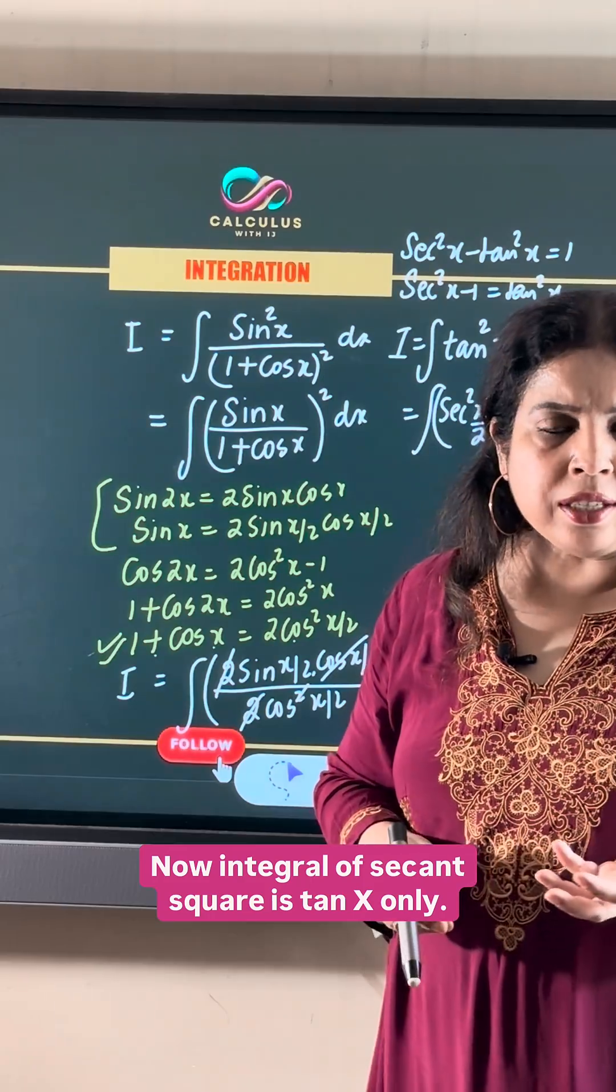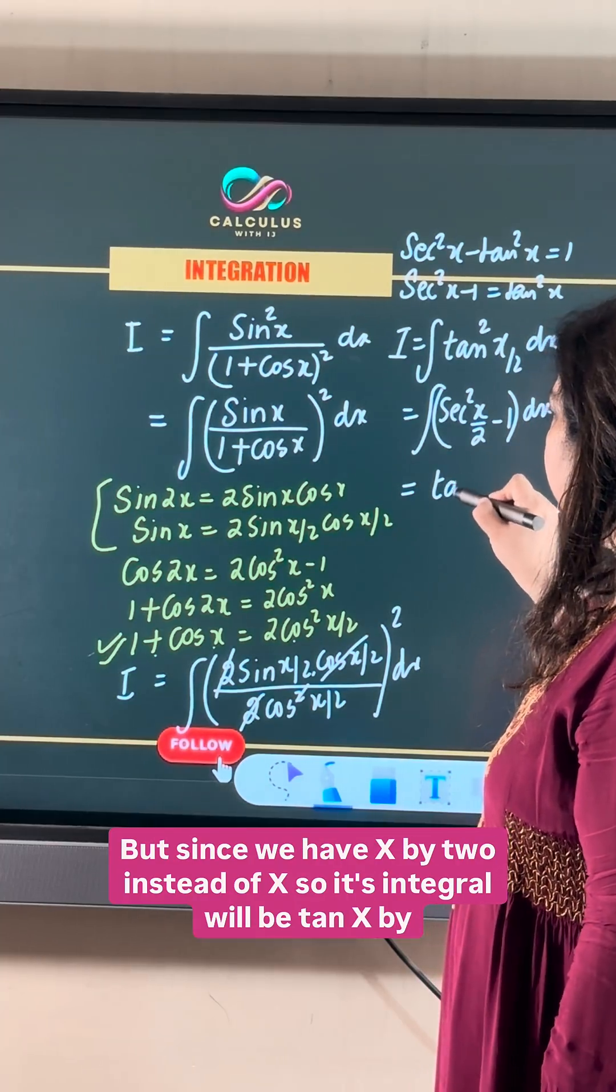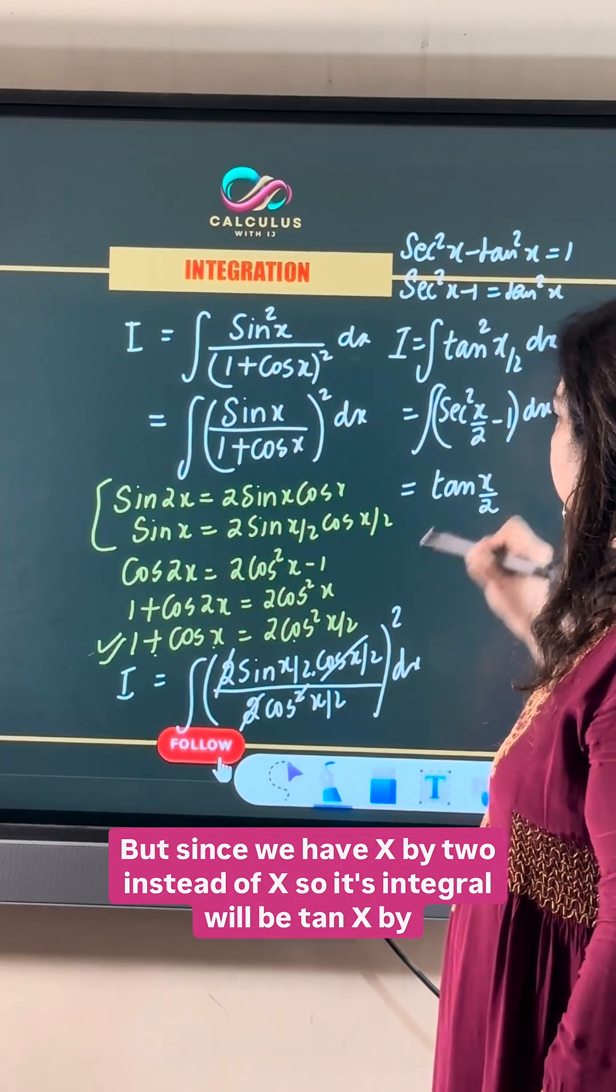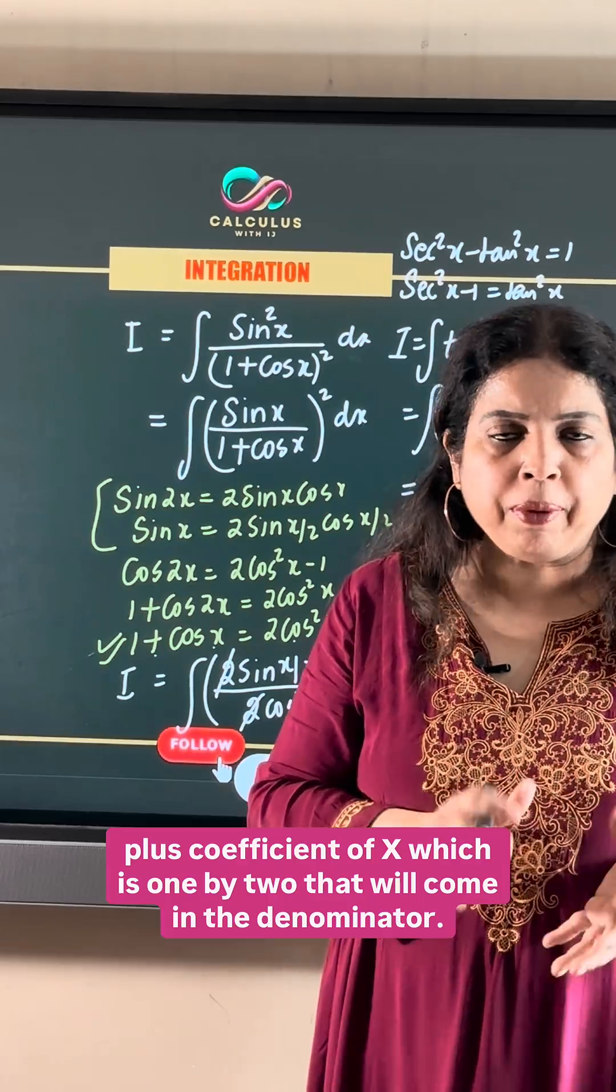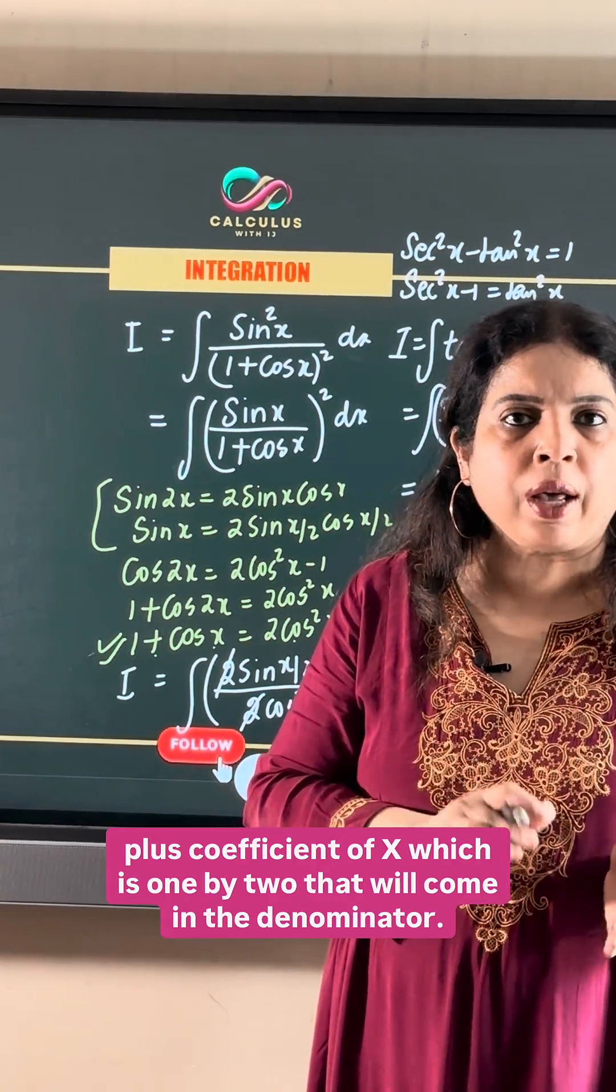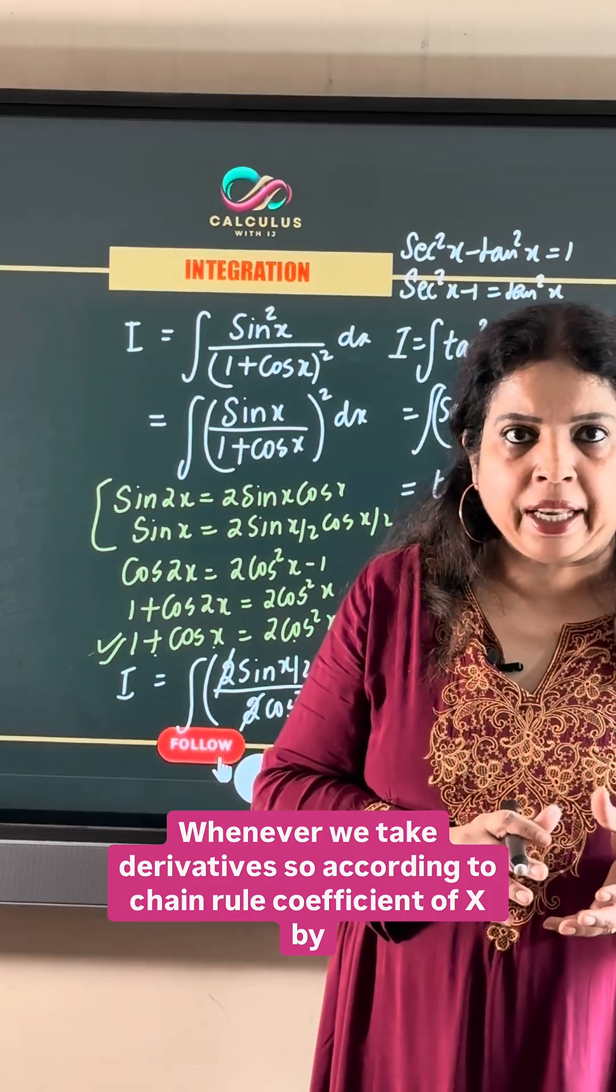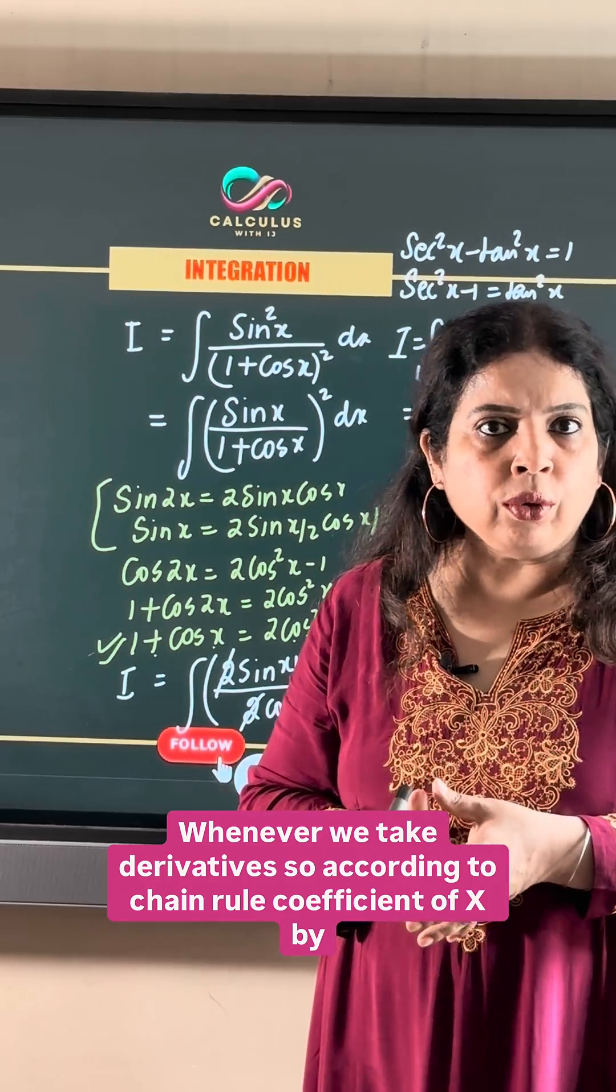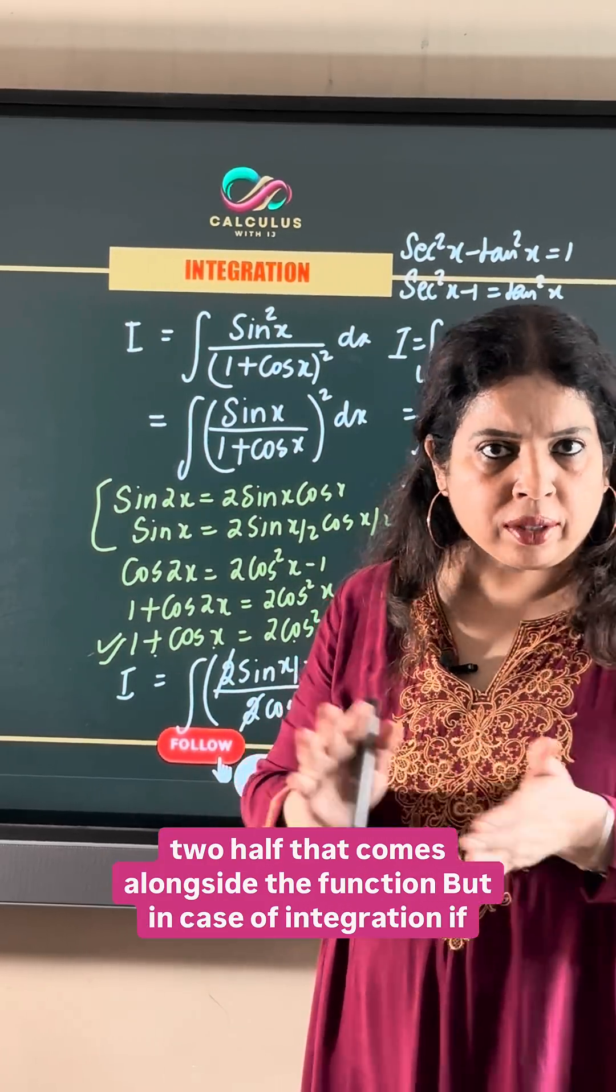The integral of secant square is tan x. But since we have x by 2 instead of x, its integral will be tan x by 2 plus the coefficient of x, which is 1 by 2, that will come in the denominator. According to the chain rule, the coefficient of x by 2, which is half, comes alongside the function.